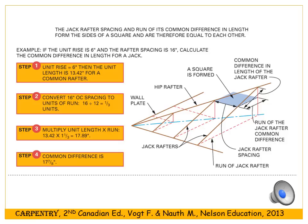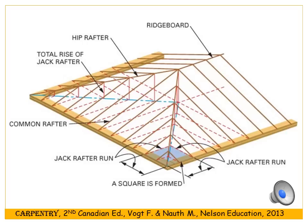For a 6-12 roof, the unit length is 13.42. Converting to 16-inch on-center spacing, multiply by the run to get 17.89 inches — so the common difference is 17 and 7 eighths of an inch. For 24-inch on-center spacing, the difference is two times 13.42. The hip jack rafters meet on and are supported by the hip rafter.